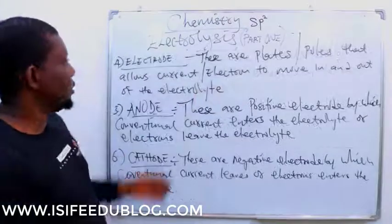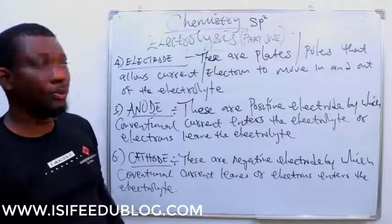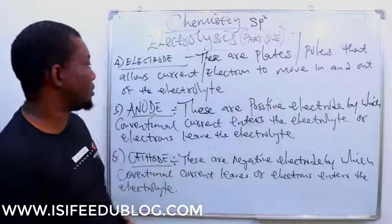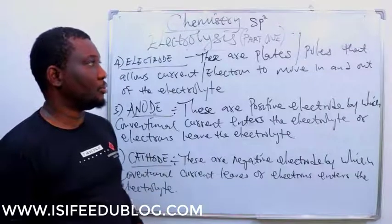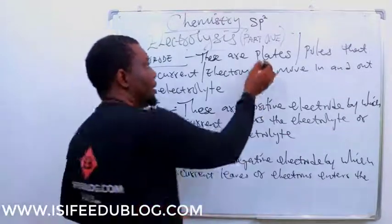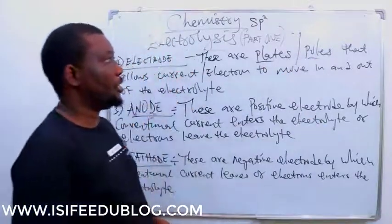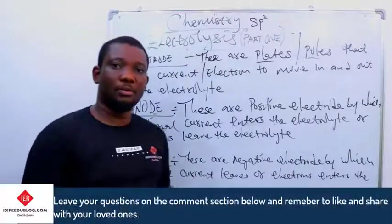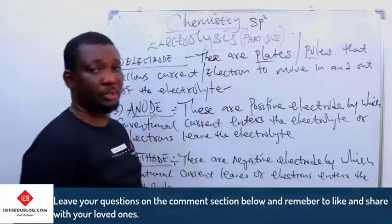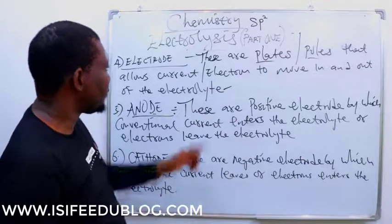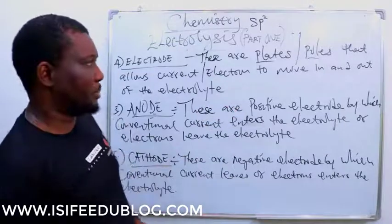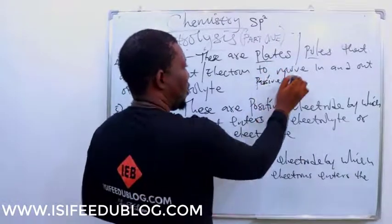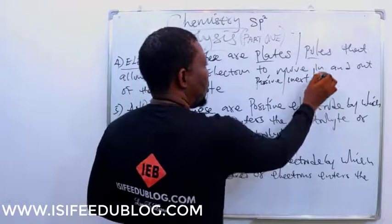Electrodes are plates, poles, or wires that allow currents or electrons to move in and out of the electrolyte. This plate or pole or wire can be a metal or a non-metal. Electrodes can be passive — also called inert or unreactive — or active.